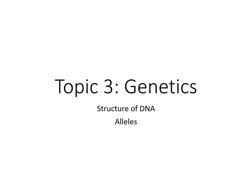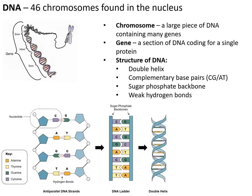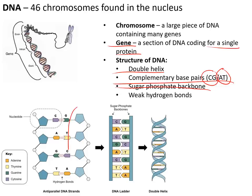Topic three: genetics is about the structure of DNA and alleles. DNA is made up of chromosomes. A chromosome is a large piece of DNA containing genes — sections of DNA coding for a single protein. DNA has a double helix structure with complementary base pairs C-G and A-T, a sugar-phosphate backbone, and weak hydrogen bonds joining the bases down the middle.